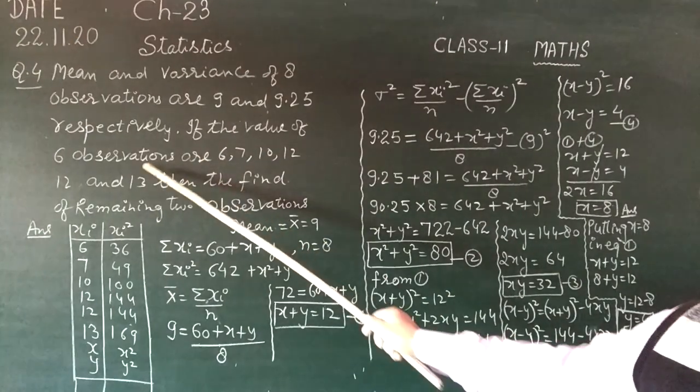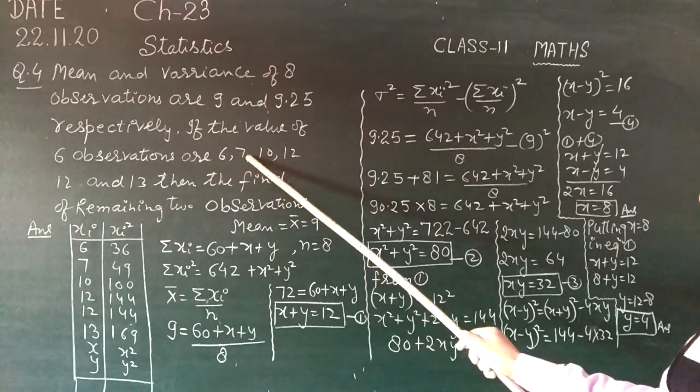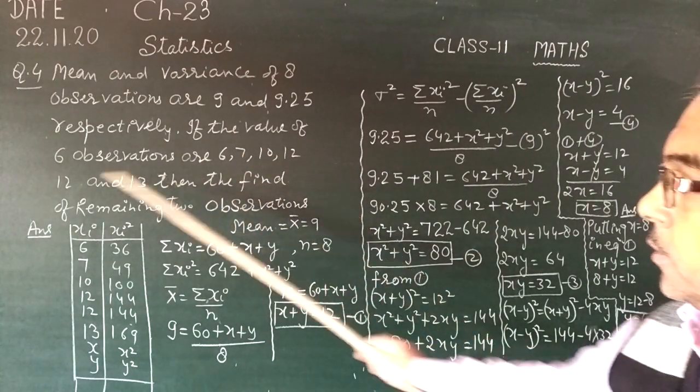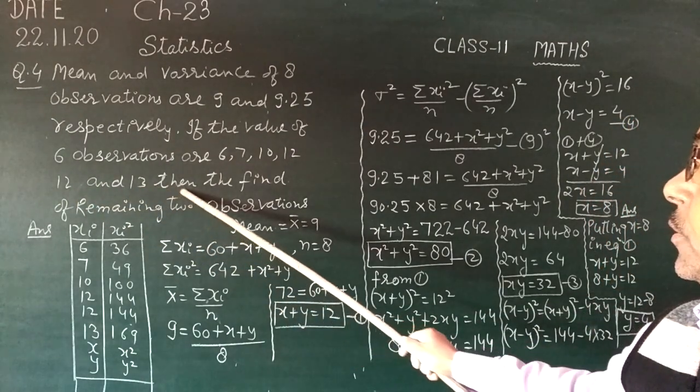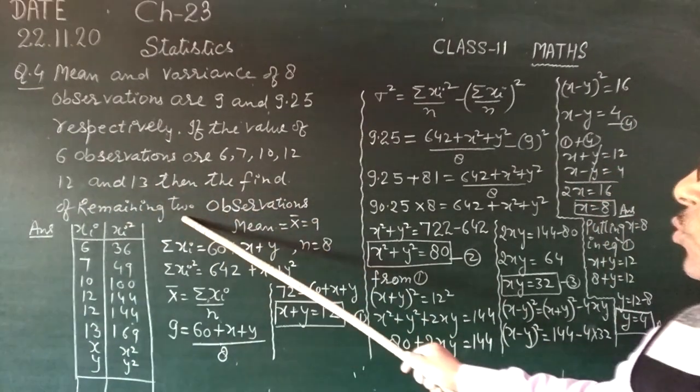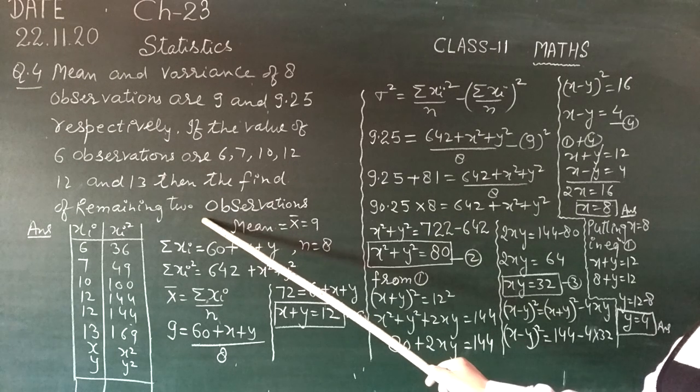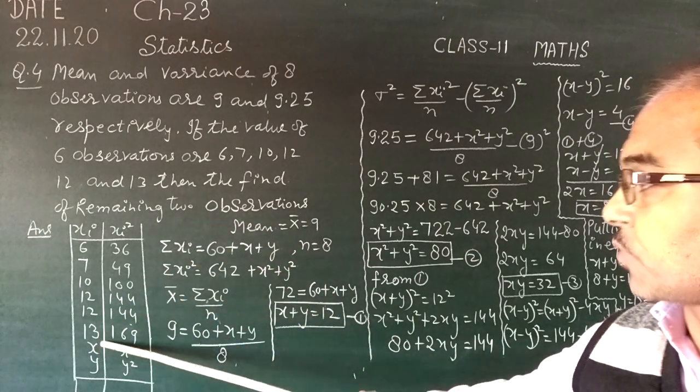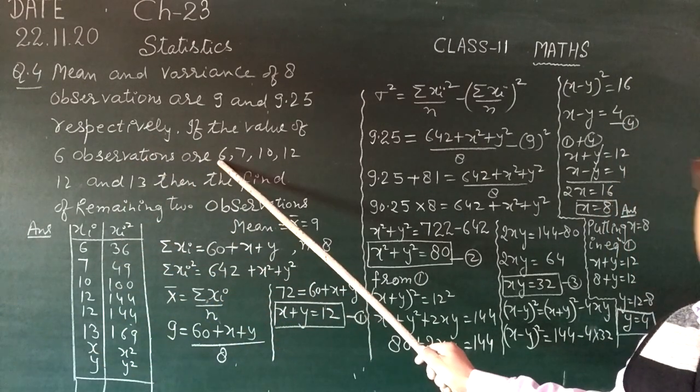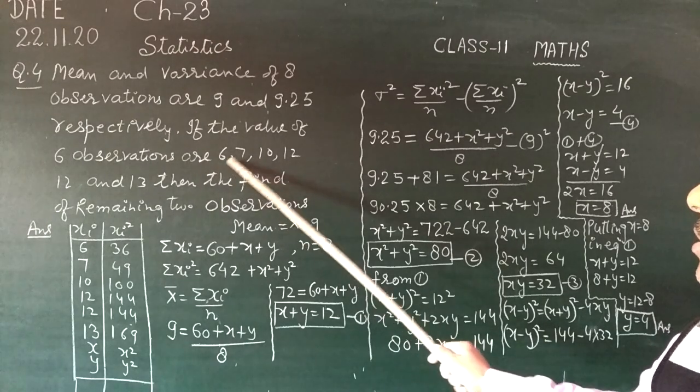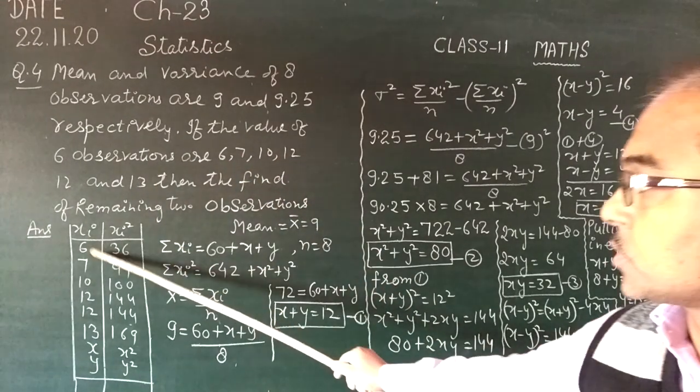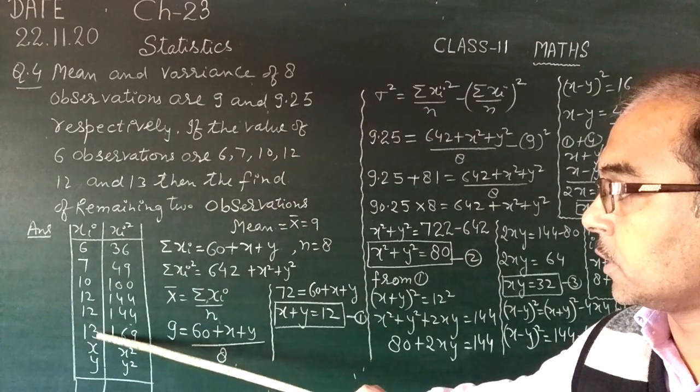If the value of observations are 6, 7, 10, 12, 12 and 13, then the remaining two observations. The remaining 2 observations are 6, 7, 10, 12, 12, 13, x, y.